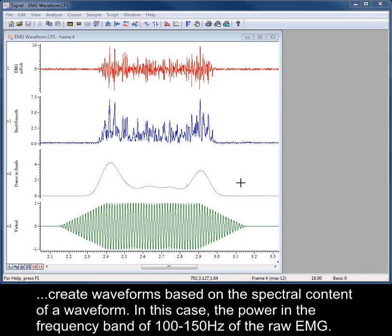Create waveforms based on the spectral content of a waveform. In this case, the power in the frequency band of 100 to 150 Hz of the raw EMG.